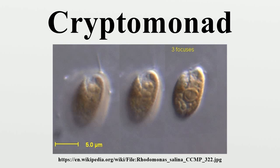The first mention of cryptomonads appears to have been made by Christian Gottfried Ehrenberg in 1831, while studying Infusoria. Later, botanists treated them as a separate algae group, class Cryptophyceae or division Cryptophyta, while zoologists treated them as the flagellate protozoa order Cryptomonadina.